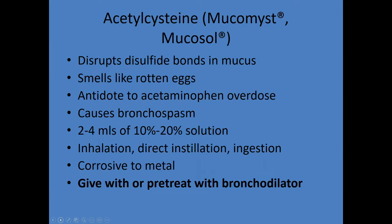Mucomyst or acetylcysteine disrupts disulfide bonds. If you think of a molecule of mucus as a centipede, the disulfide bonds are the legs — not the backbone. Mucomyst can disrupt those bonds and thin the secretions. It smells like sulfur or rotten eggs. It's also a potential antidote to acetaminophen overdose, which can kill your liver, and can be administered IV or PO. It causes bronchoconstriction, so it should be coupled with a bronchodilator — give with or pre-treat with bronchodilator. Direct instillation or ingestion are also options.